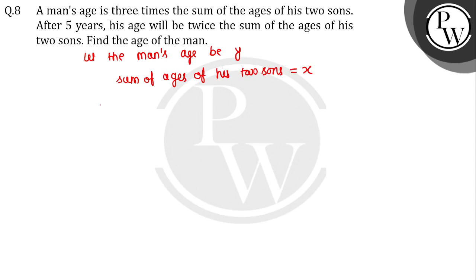According to the question, we have to take the present ages. Man's age is three times the sum of his two sons' ages, so y equals 3x. After five years...